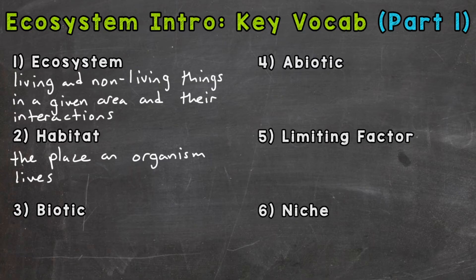For number three, we have biotic. Biotic factors of ecosystems are living things or once were living things. So plants, animals, bacteria, etc.